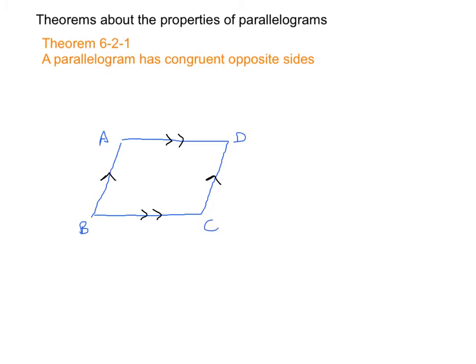Now we're going to talk about some theorems dealing with the properties of parallelograms. We have four theorems and our first one 6-2-1 says that a parallelogram has congruent opposite sides. So we're going to look at the parallelogram from the previous slide ABCD and we're going to explore exactly what this theorem says.